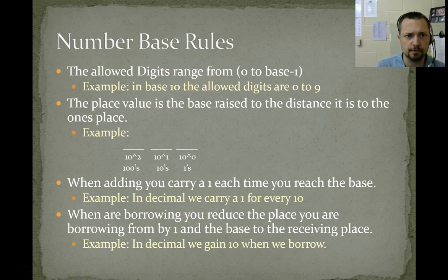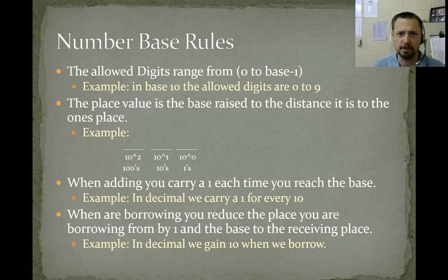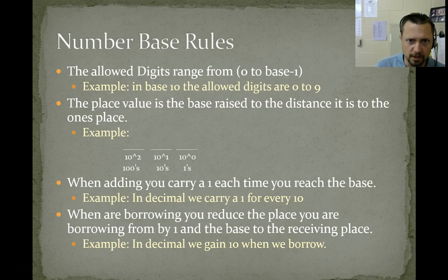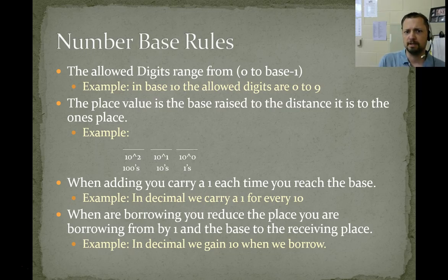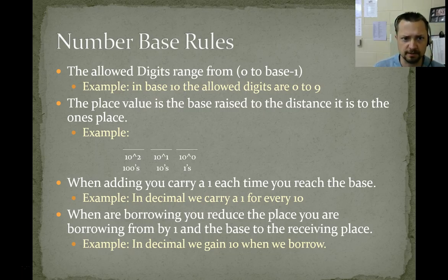Number base rules: the allowed digits range from 0 to the base minus 1. For example, in our decimal system, which is base 10, the allowed digits are 0 to 9. 10 is not actually a number in our system — it's a combination of a 1 in the tens place and a 0 in the ones place.